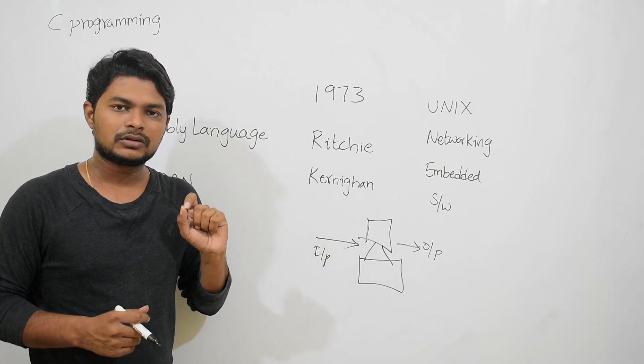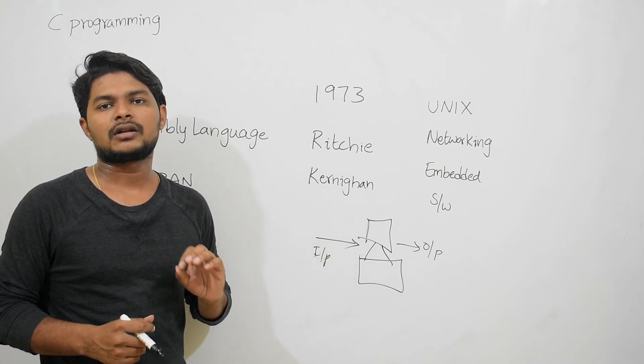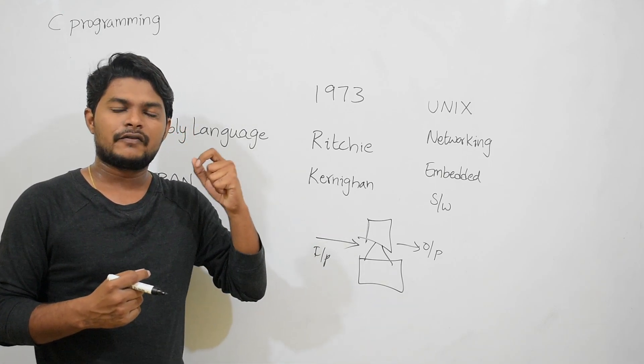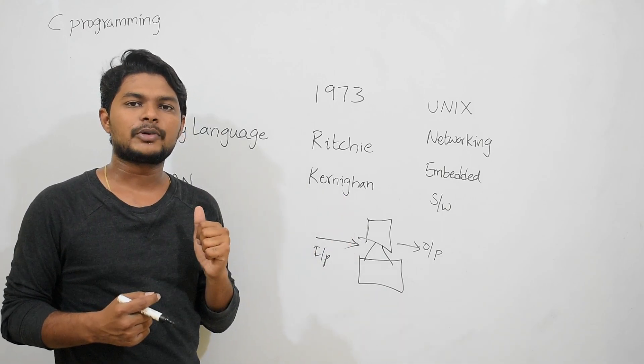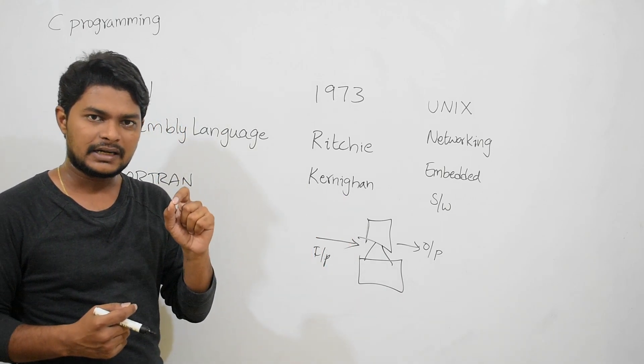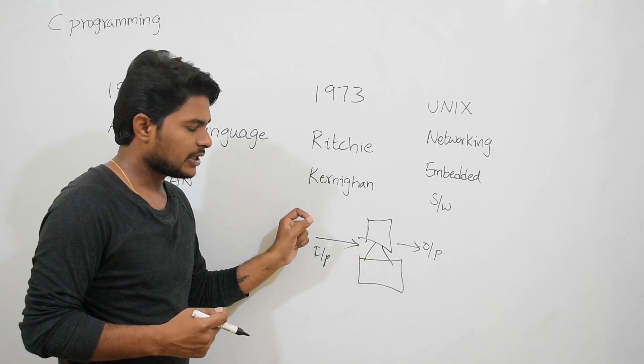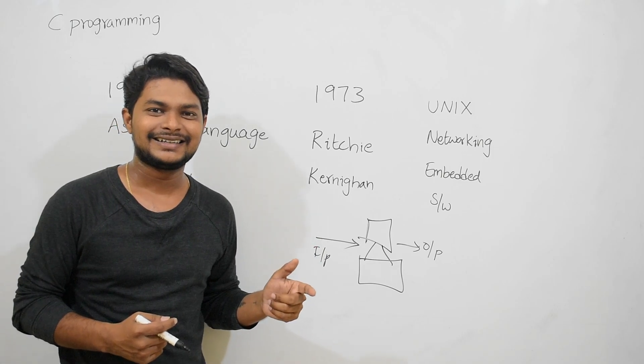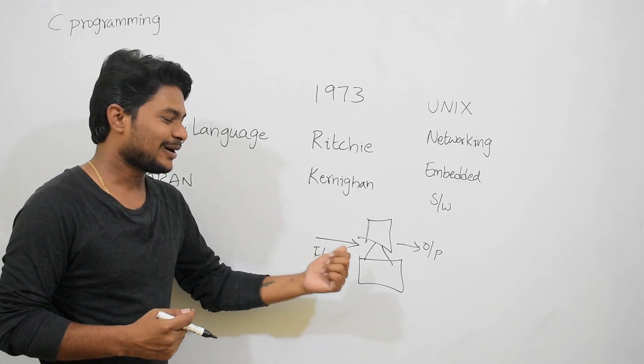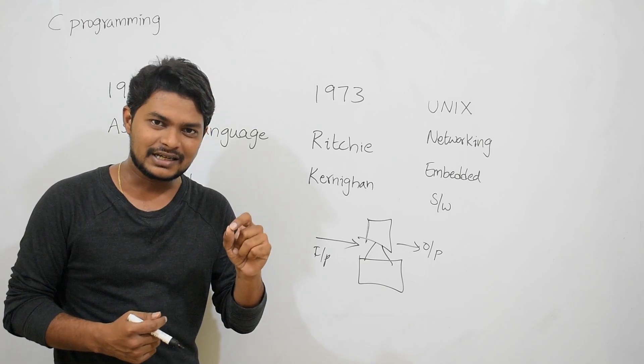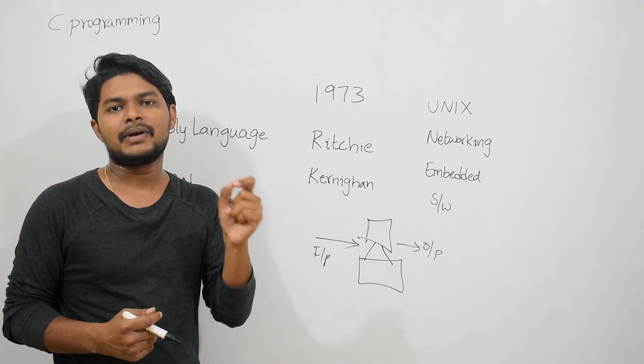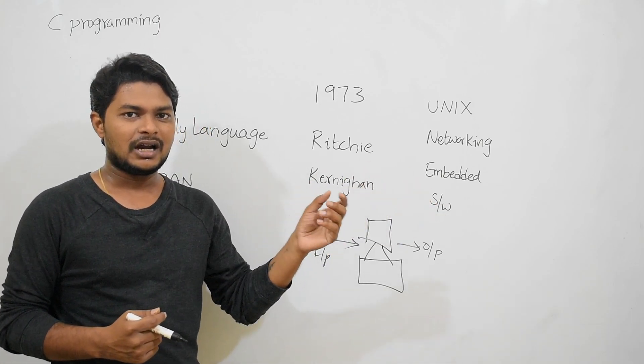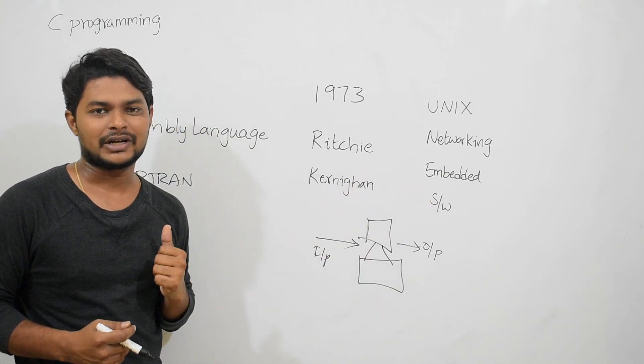We know there are many advantages of computers, but to make use of those advantages, we need to use the computer. The thing is, the computer is a machine and we are human beings - both are different. How do we interact? We require a medium or mechanism such that whatever we are telling, it should be able to understand, and whatever it is telling, we should be able to understand.